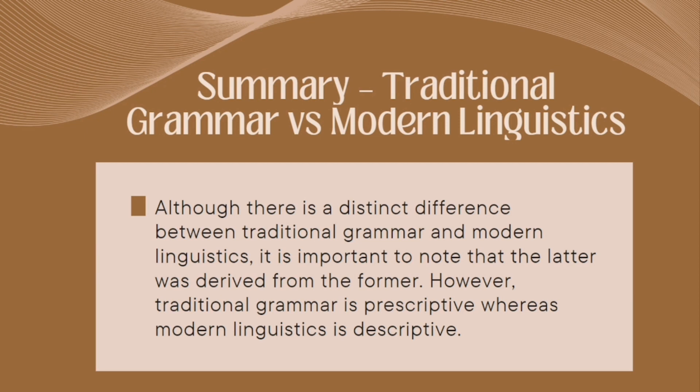So this is the summary of the differences between traditional grammar and modern linguistics. Although there is a distinct difference between the two, it is important to note that modern linguistics was derived from traditional grammar. However, traditional grammar is prescriptive, whereas modern linguistics is descriptive.